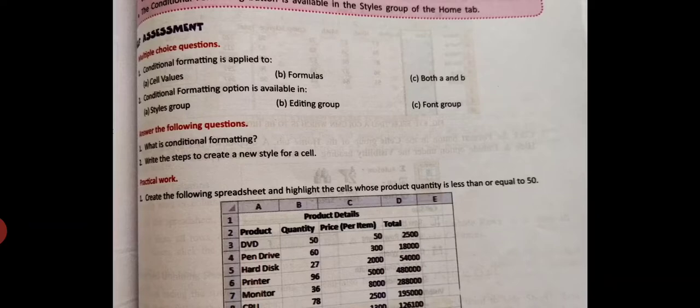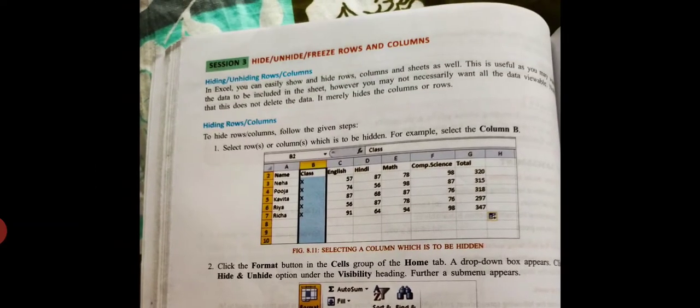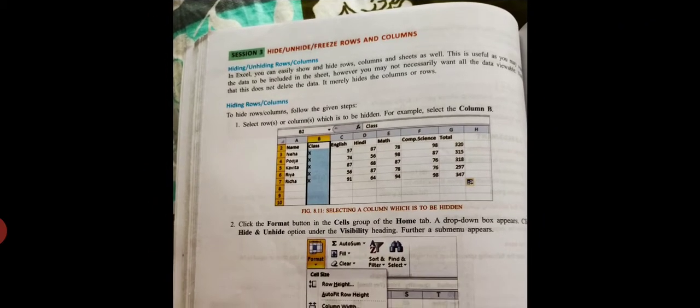Next is hide, unhide, freeze rows and columns. Hiding means if you want to hide any row and column, simply in the format cells home tab, you will see hide/unhide. You will simply click hide, then that row or column will be hidden. Once you hide, you will see unhide option is also there, then you can unhide your hidden row or column.